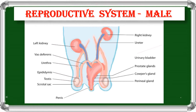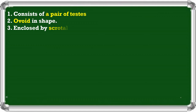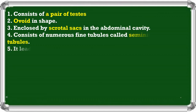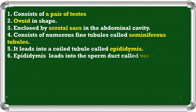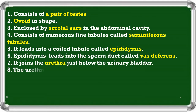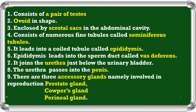There are three accessory glands namely the Prostate gland, Cowper's gland, and Perineal gland. What are the three accessory glands present in the male reproductive system in rabbit? They are the Prostate gland, Cowper's gland, and Perineal gland.